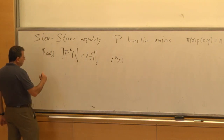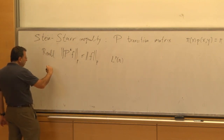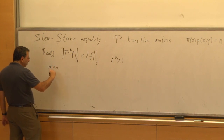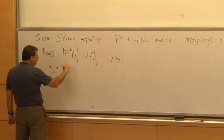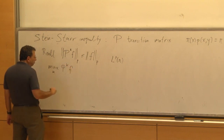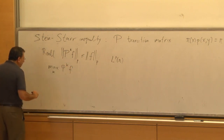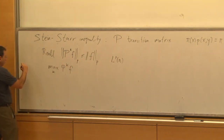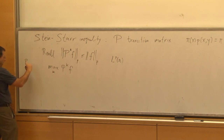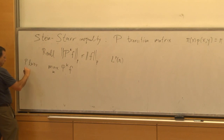The inequality is about the maximum over K of P^K F. Let's add the assumption that P is lazy, meaning P(x,x) is greater or equal to one-half. Then when you do this maximization...